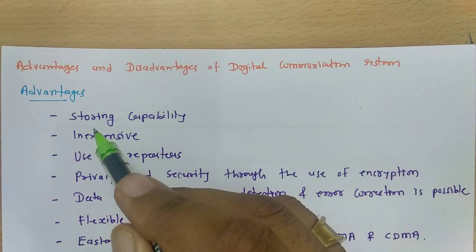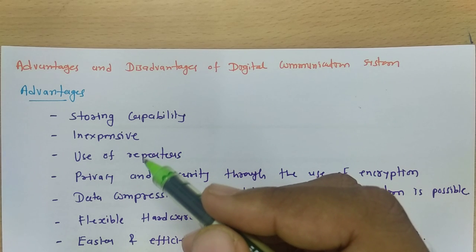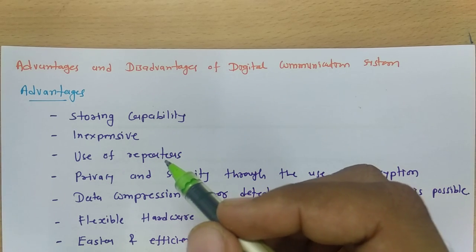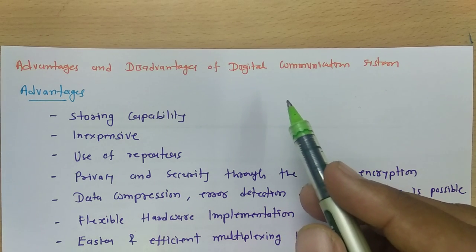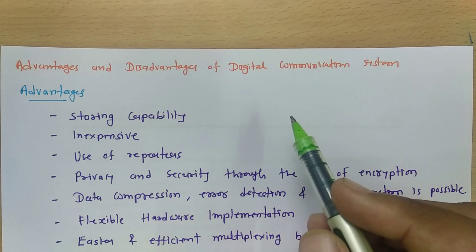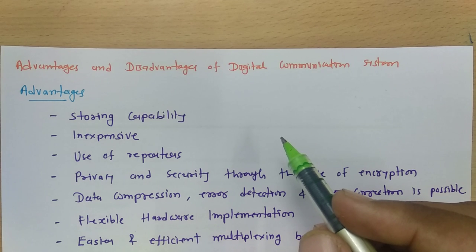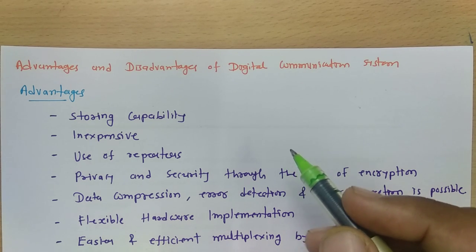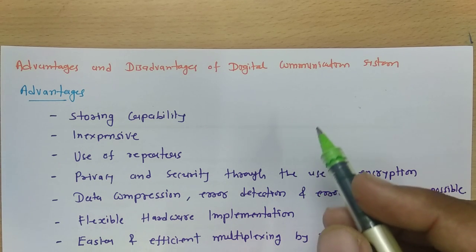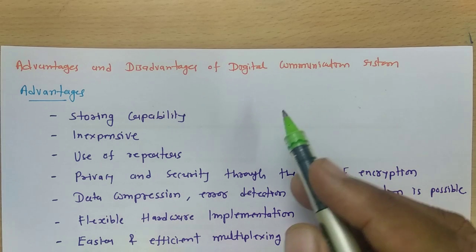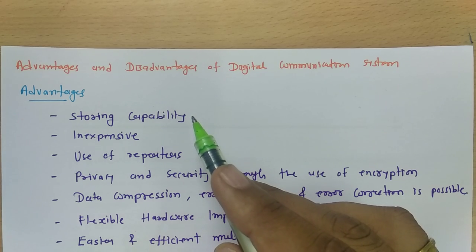The first advantage is storing capability. Digital signals can be easily stored. Nowadays, digital devices like smartphones have memory in gigabytes — you can store 50 movies on your smartphone. Computers have memory in terabytes, allowing large amounts of data to be stored. So storing capability is very high with digital communication systems, and that is one major advantage.